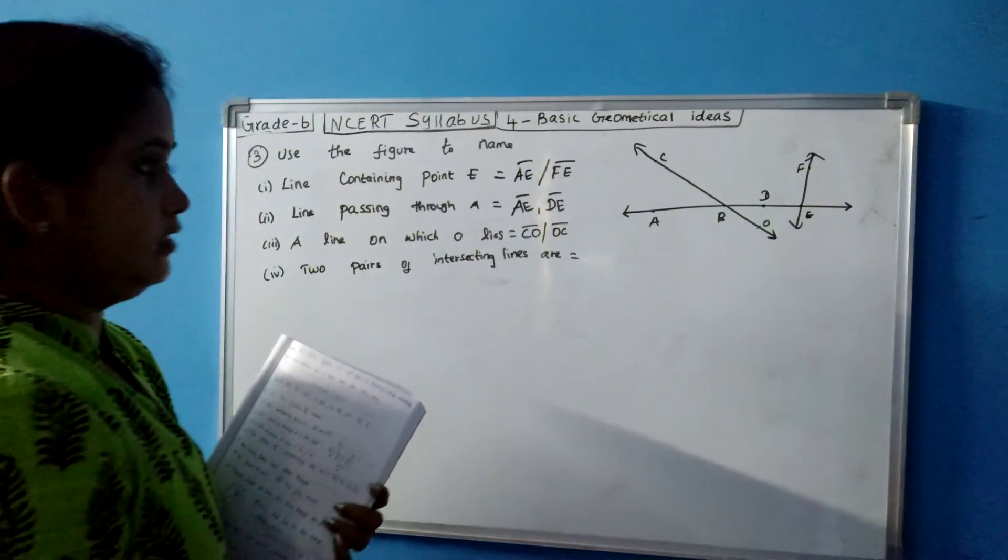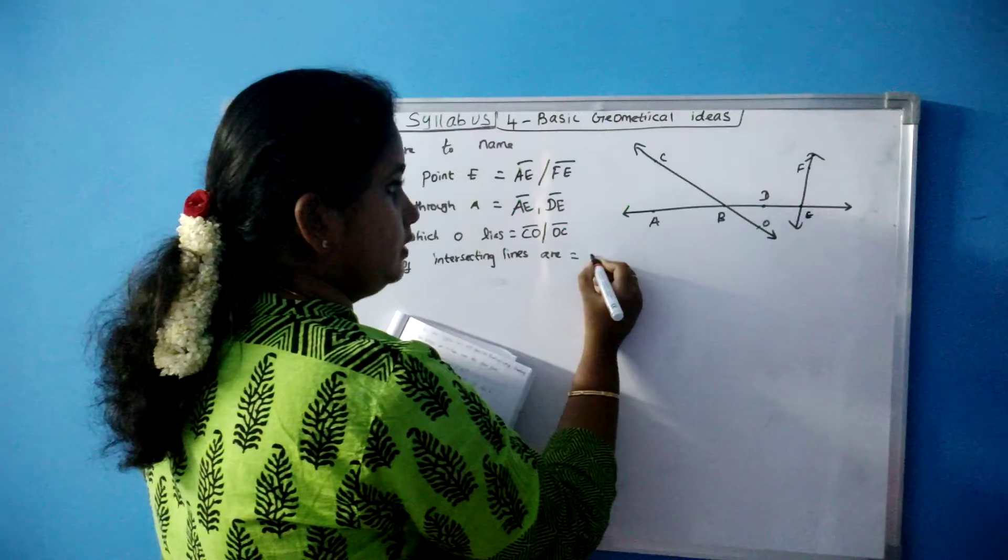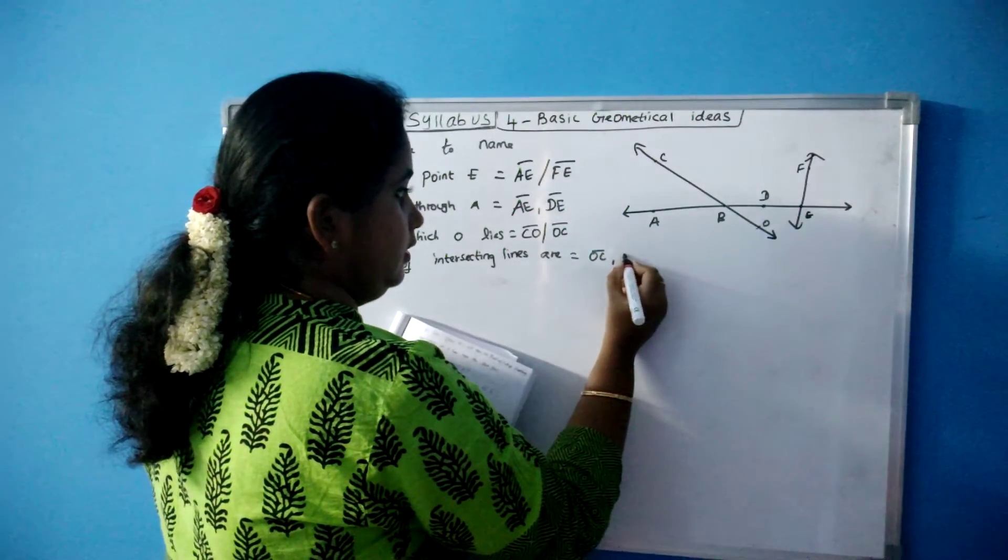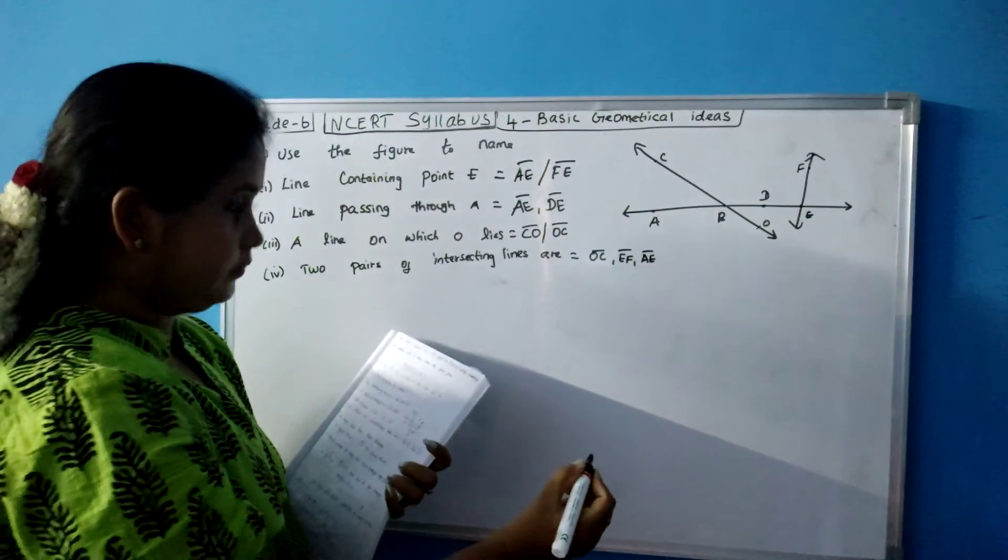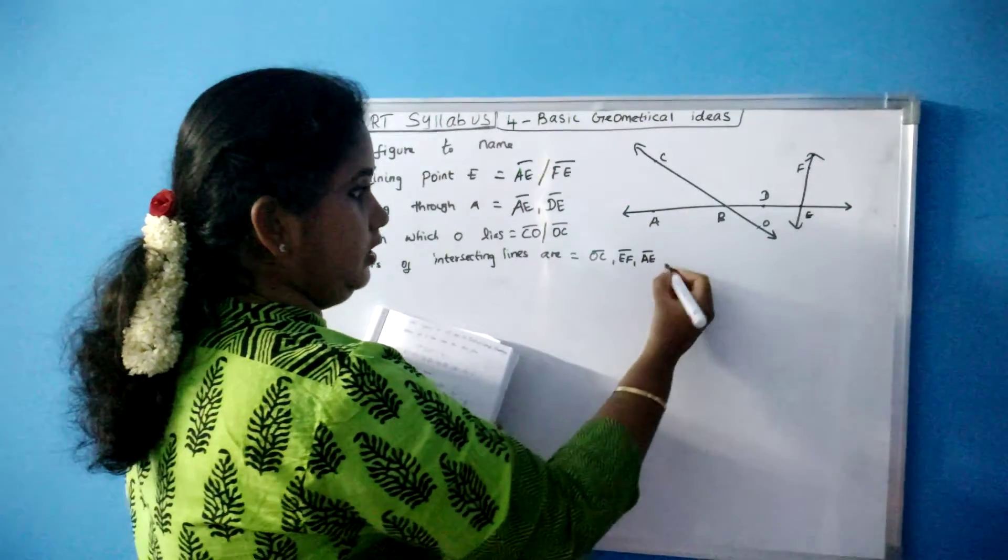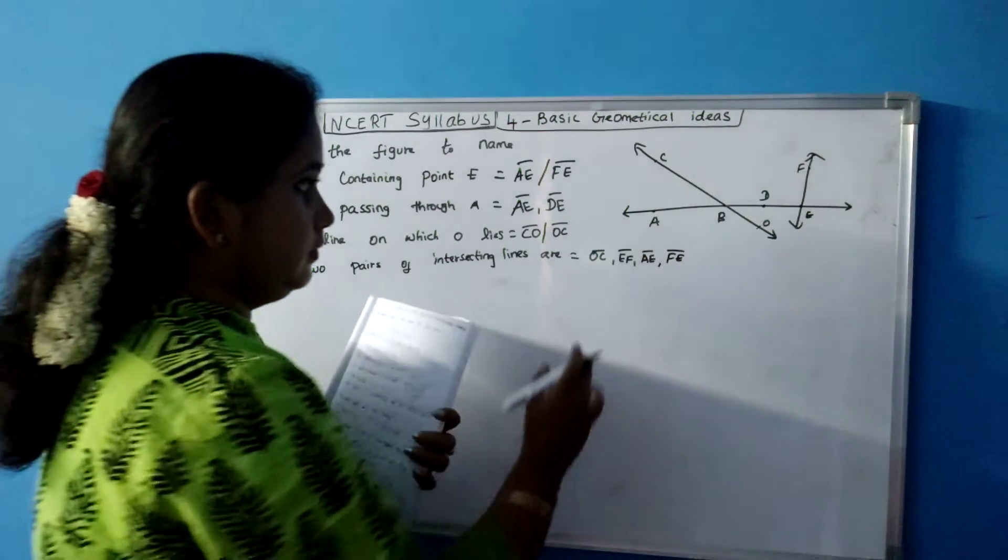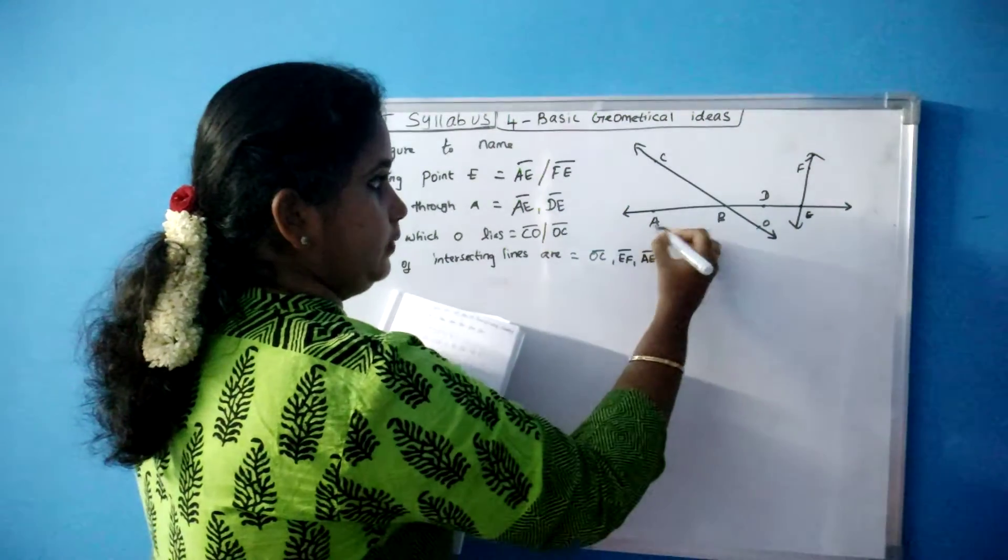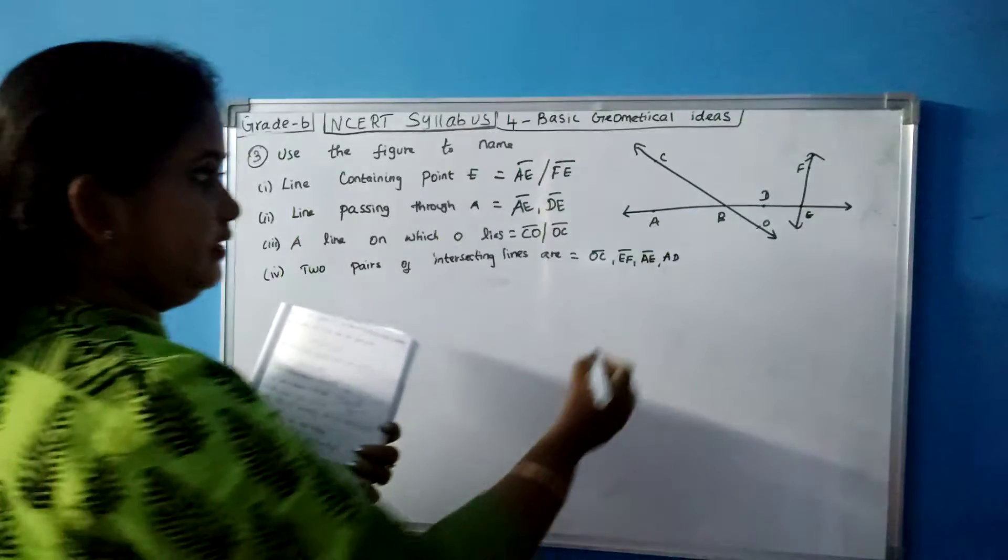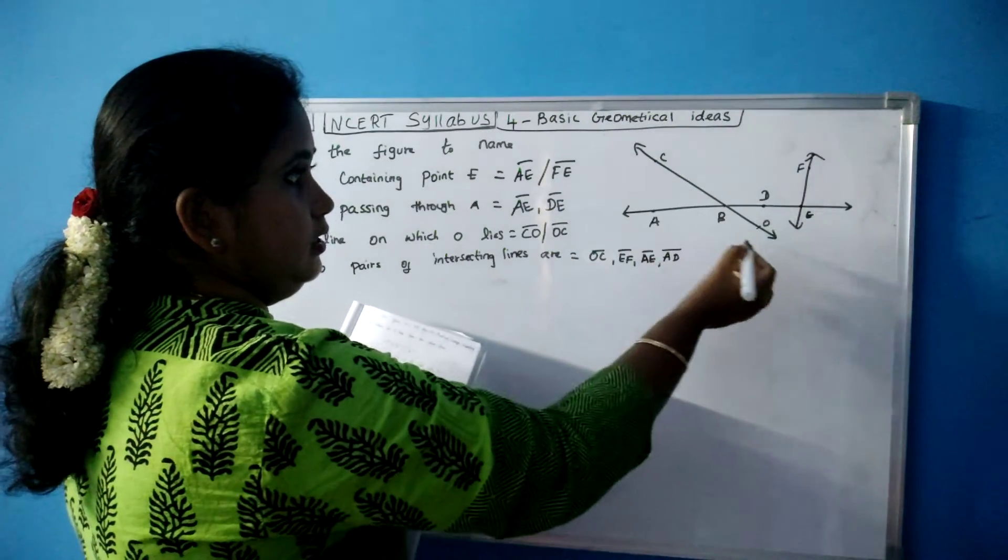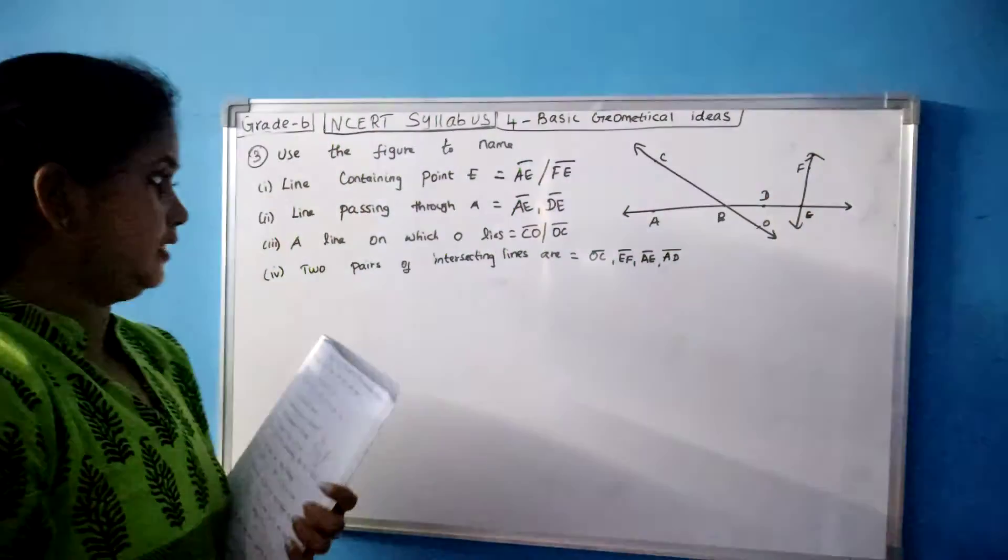Two pairs of intersecting lines. So what are the two pairs of intersecting lines? So you have to write like this also and like this also. So it is OC, EF, AE. What else? EF or FE is both same. Then this one AD. So this is the two pairs of intersecting lines: OC, EF, AE, AD. Two pairs of intersecting lines.